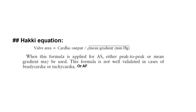So the Gorlin equation uses flow across the valve divided by the square root of mean gradient times a constant, while the Hackey equation simply uses cardiac output divided by the square root of mean gradient. For the aortic valve we use mean gradient but can also use peak-to-peak gradient, which is usually approximately equal to the mean gradient. You need to know this equation and plant it in your brain so that during a case you can instantly calculate the valve area.